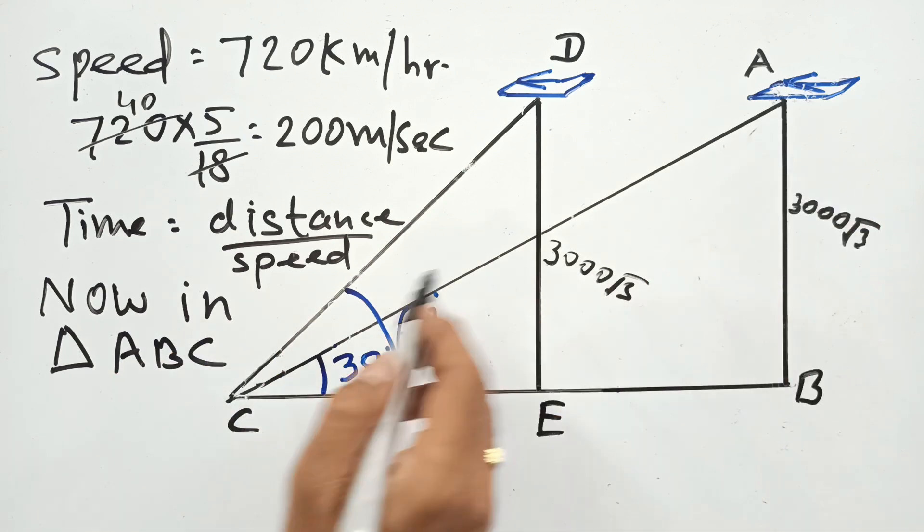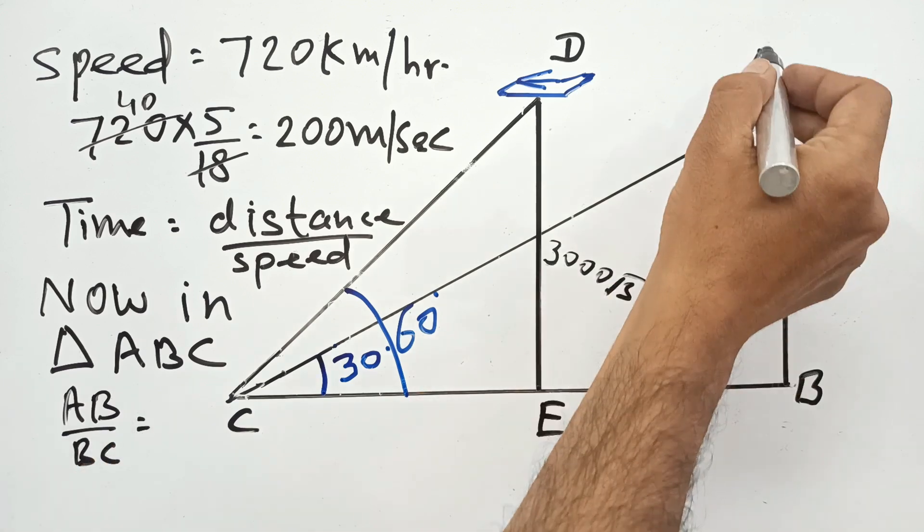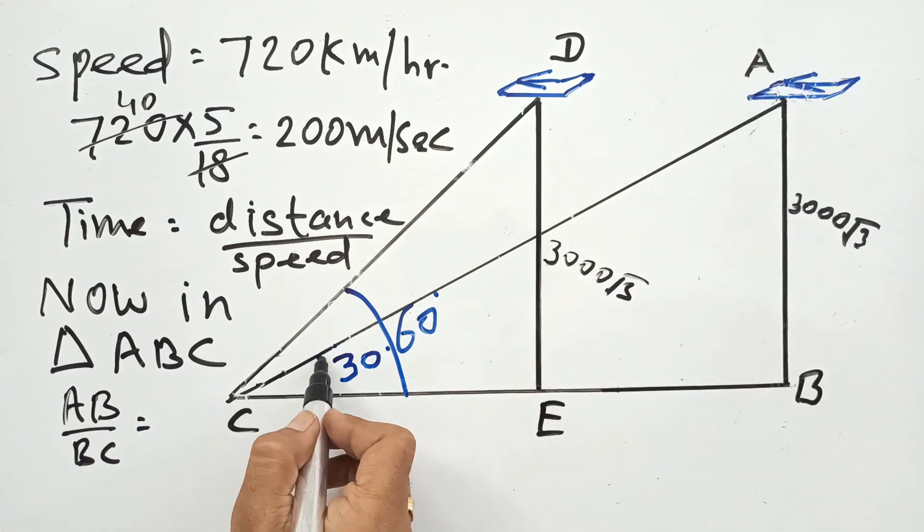In triangle ABC, this perpendicular upon base, AB upon BC is equal to tan 30.